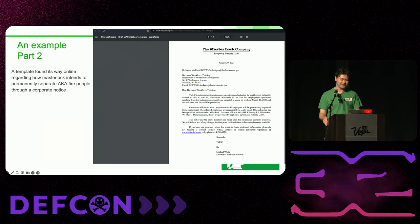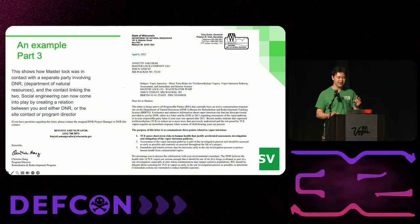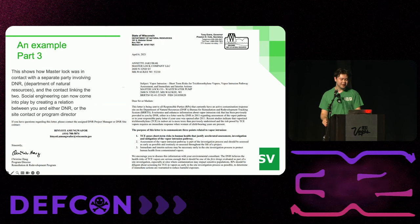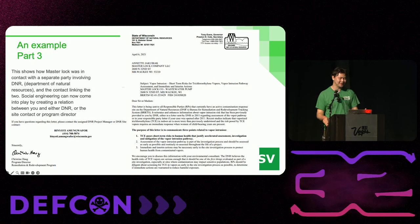This is a great social engineering avenue. There's a contract between the state of Wisconsin and Master Lock, and at the bottom you can see the name, phone number, and email of the contact. So what you can do is become a middleman — and that's just finding something on the open internet. You don't have to go through anyone's email to find this information.